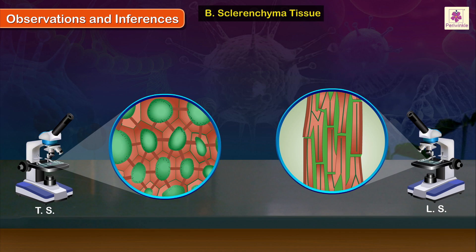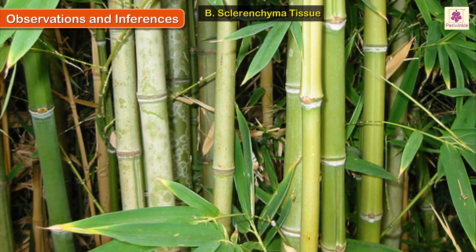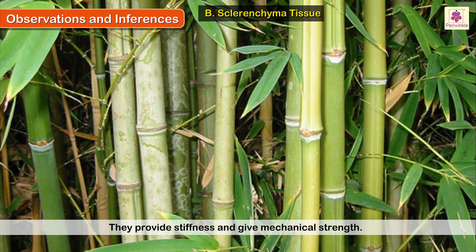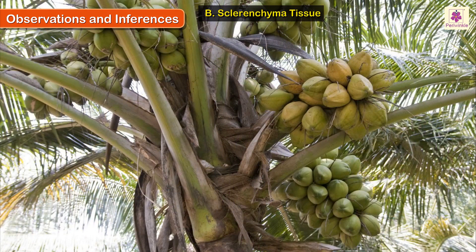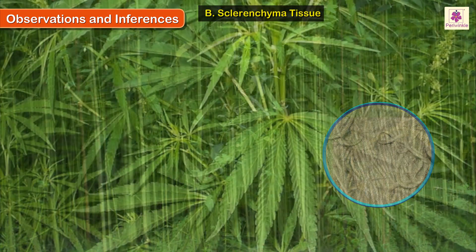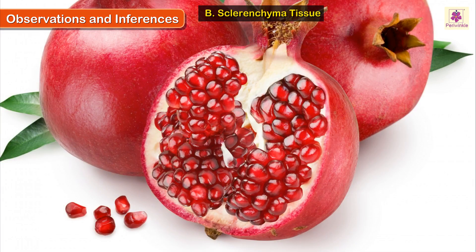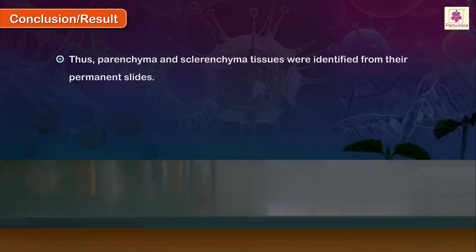The cell walls are thick and consist of primary and secondary walls. Cells show regular pits, which are regions of unthickened spots in the cell walls. The function of sclerenchyma is to provide stiffness and give mechanical strength to the parts of the plant in which they occur. Sclerenchyma is seen in plant fibers, e.g. jute and hemp, and in seed coats of many dicots.